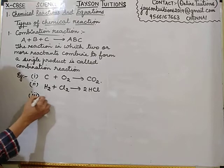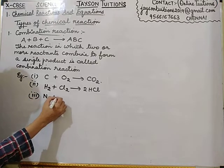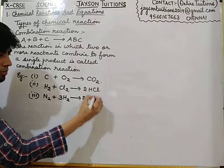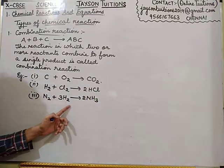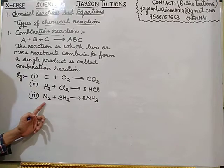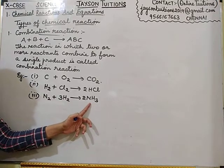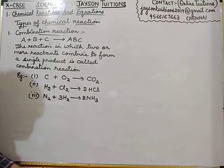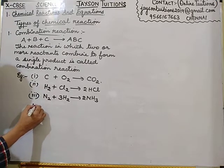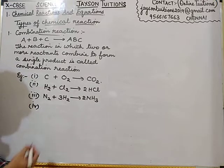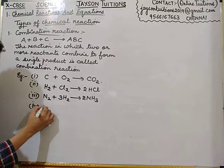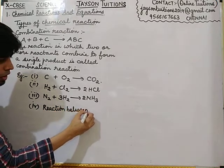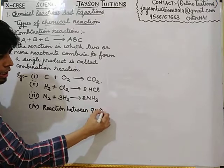Third example: nitrogen reacts with hydrogen to form ammonia. Nitrogen is one reactant, hydrogen is one reactant. These two reactants combine to form ammonia, a single product — so it is an example of combination reaction. The fourth example is very important: the reaction between quicklime and water.